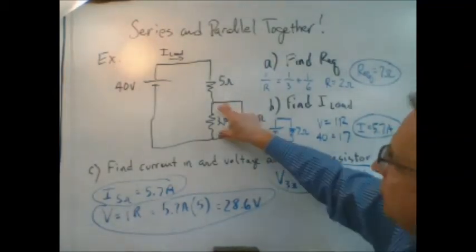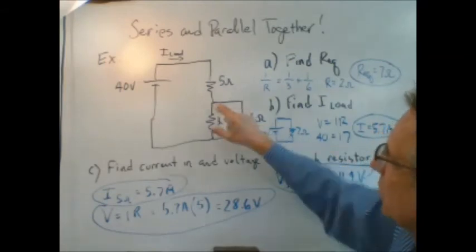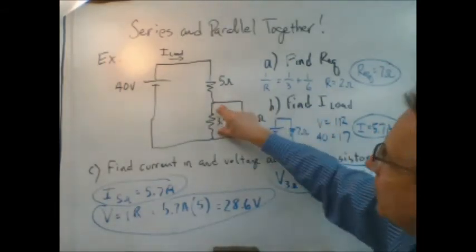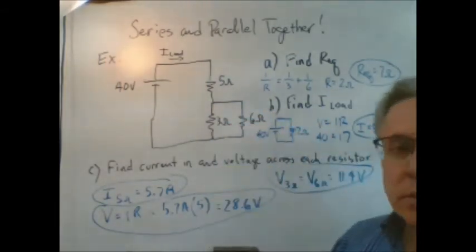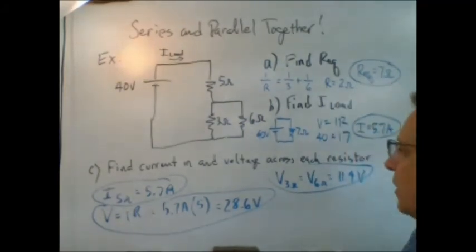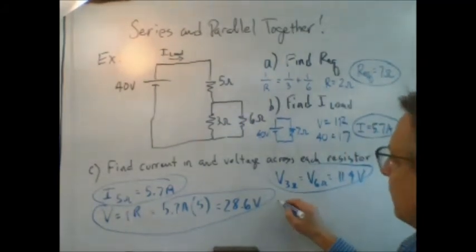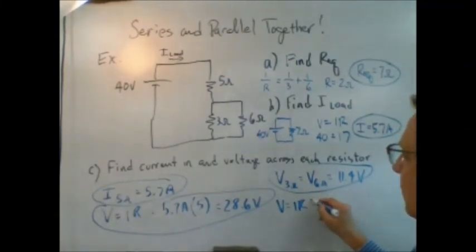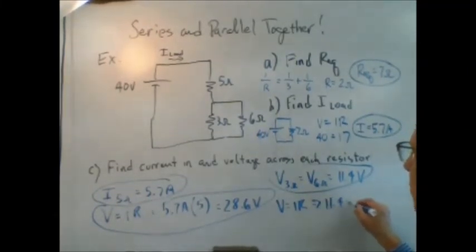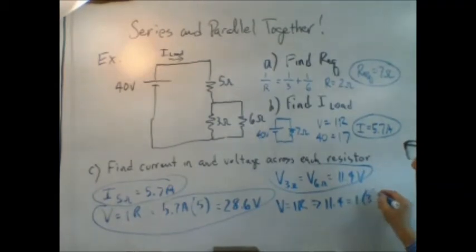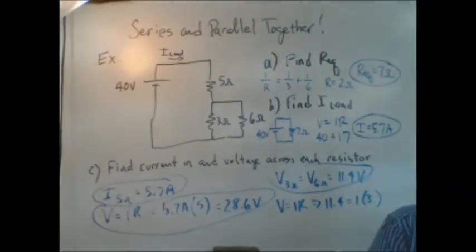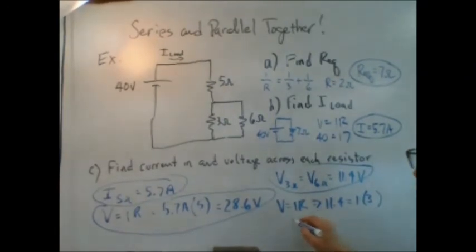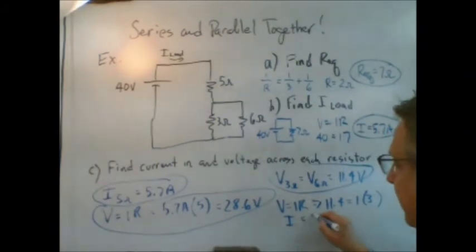And if we know 11.4 volts is dropped across that 3-ohm resistor, we can use V equals IR to find the current here and do the same with that one as well. So V equals IR, 11.4 equals I times 3. And if I calculate that, I get a current in the 3-ohm resistor of 3.8 amps.